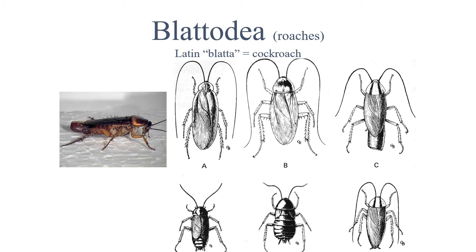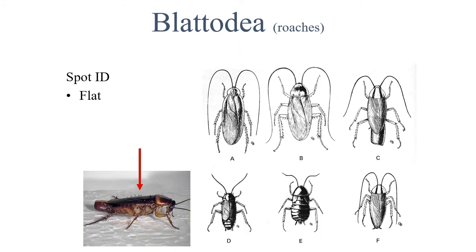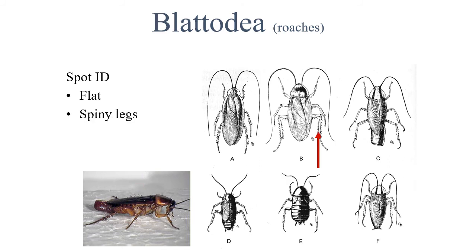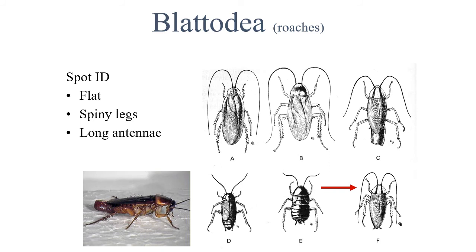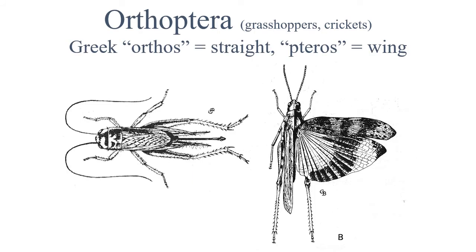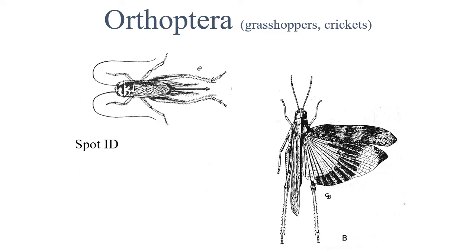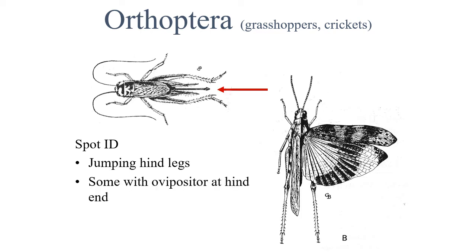Next up we have the Blattodea, or the cockroaches. Their body plan is very flat with spiky legs and very long antennae. The Orthoptera, made up of the Greek words for straight wing, include the grasshoppers and crickets. They have large back legs modified for jumping. Some of them have visible ovipositors at the hind end, which are structures females use to lay their eggs.